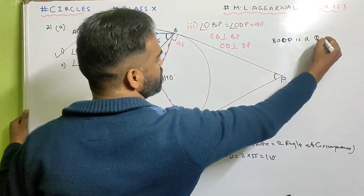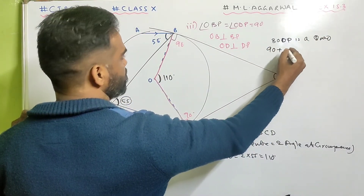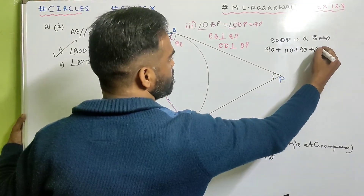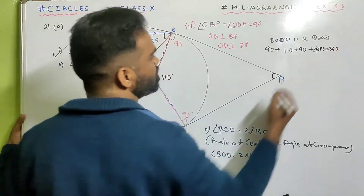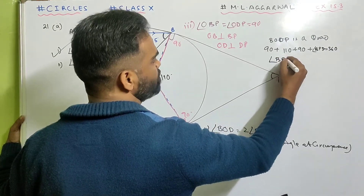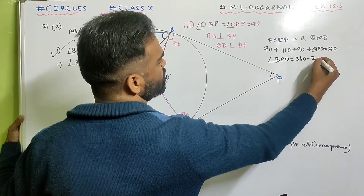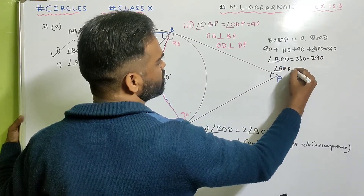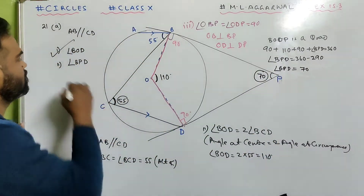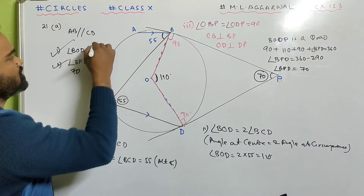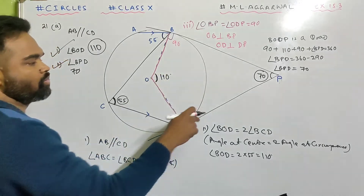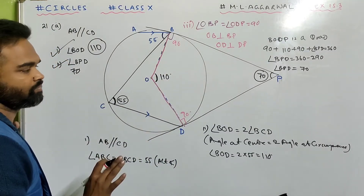So angle BPD equals 360 minus 290, which is 70 degrees. Done. BOD is 110 degrees and BPD is 70 degrees. Angle at the center is twice the angle at circumference, and these angles add to give 360 degrees.